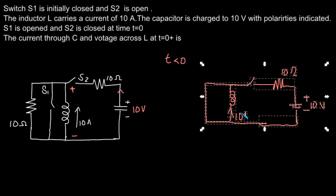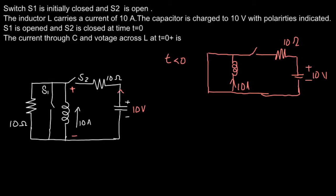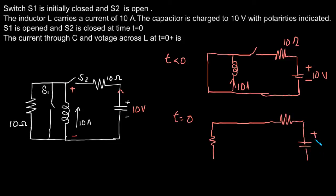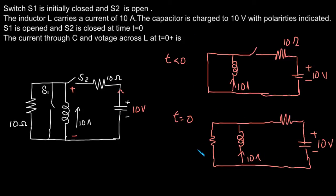At t equal to 0 plus, switch S1 is opened and S2 is closed. Drawing the circuit for t equal to 0 plus: with S1 open, the resistor comes into the picture. S2 is closed, and we have the 10 ohm resistor and the capacitor charged to plus 10 volts, because the voltage across the capacitor cannot change abruptly. Similarly, the current through the inductor cannot change suddenly, so the current remains 10 amperes. We have 10 ohm here and another 10 ohm here.